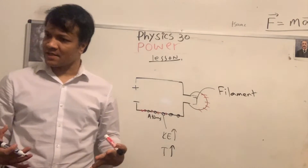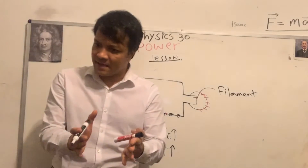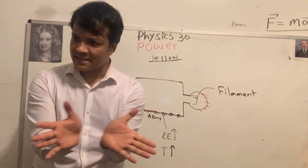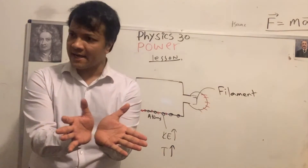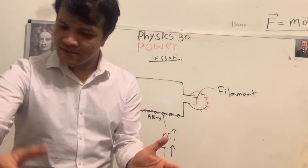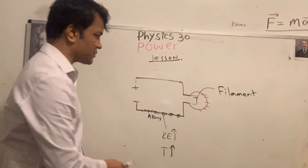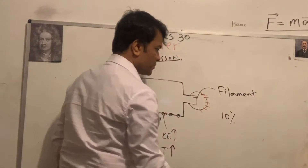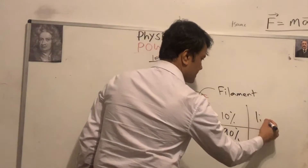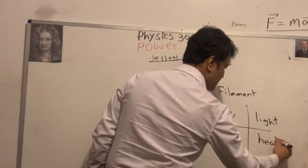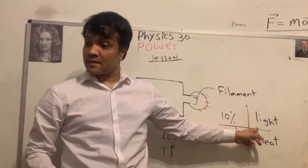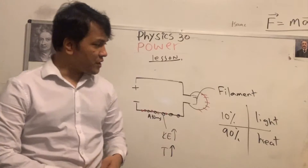So you have electric energy and you want to convert it to light. But only about 10 percent of electric energy converts to light, and 90 percent gets converted to heat — thermal energy.